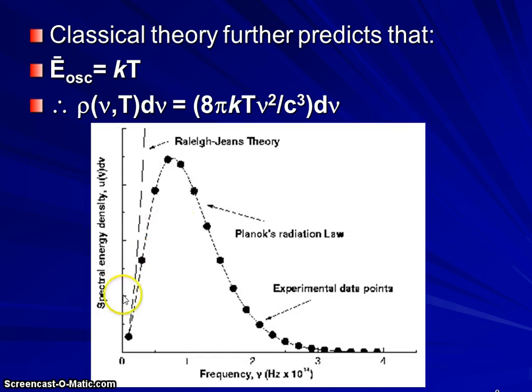And what we will find is what we call the ultraviolet catastrophe. At high frequencies, we reach infinite spectral density, infinite intensity by what's predicted here. At low frequencies, we have a pretty good agreement.